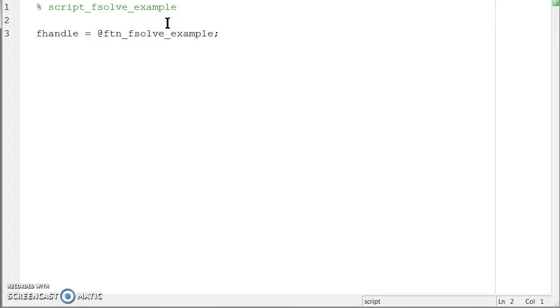And so, now, stored inside this variable fhandle, I have the call, or the pointer, to the function that I want to use. Next thing I'm going to do is I'm going to call an initial guess. So, I'm going to guess little x equals one, little y equals one as my initial guess. And then, I'm actually going to run fsolve. So, capital X, that's my final output, is equal to fsolve of my function handle, comma, my initial guess.